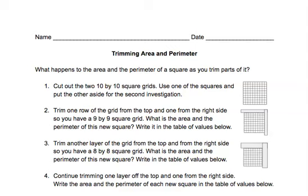Today we're going to investigate the patterns in the area and perimeter of a square as it steadily trims down to smaller and smaller sizes. This task is called trimming area and perimeter.